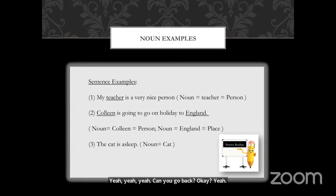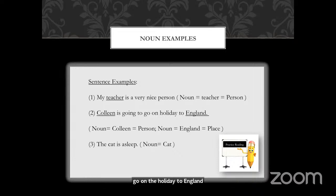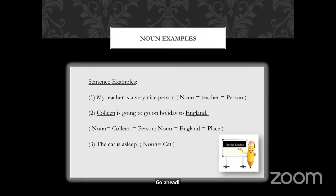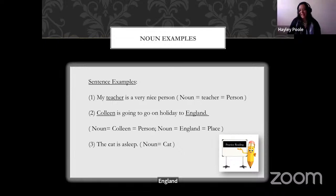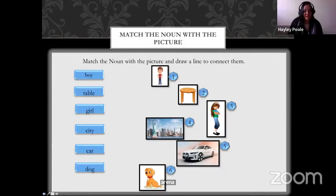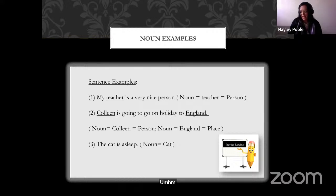The second sentence: 'Colin is going to go on holiday to England.' That is absolutely perfect. Which words in that sentence are the nouns? Colin and England — that is correct, both of them are nouns in that sentence. The third sentence: 'The cat is asleep.' The student identifies: 'Cat is the animal' — that is correct, perfectly grouped and absolutely correct.